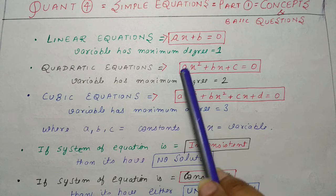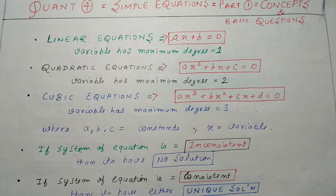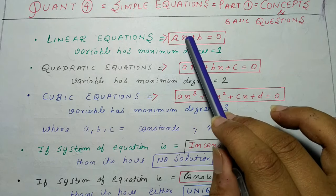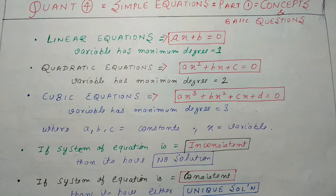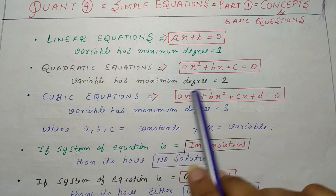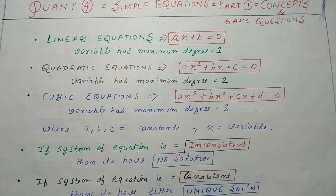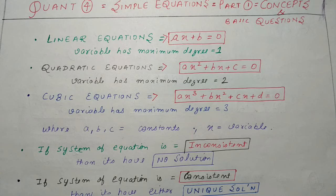यहाँ पर a, b, c जो भी form के अंदर हैं वो सारे constants हैं और x variable है। Linear equation के अंदर variable की maximum degree 1 होती है, जैसे ax + b = 0 में x की maximum degree 1 है। Quadratic equation में variable की maximum degree 2 होती है, और cubic equation में variable की maximum degree 3 होती है।